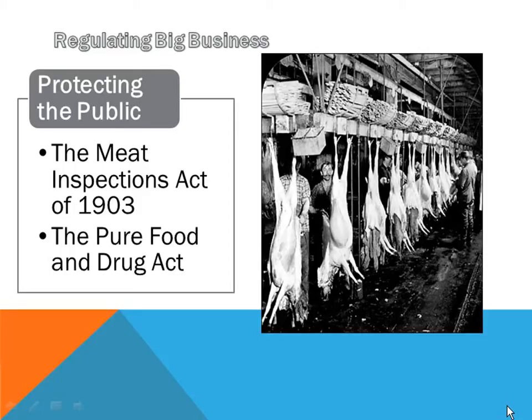Then they would skin the cow and let the skin fall to the floor, put a hook in them, and take them off to the next spot. There they'd chop up the parts, trim off the ribeyes and T-bone steaks and all that stuff, and let all the trimmings — the fat, the gristle — fall to the floor.